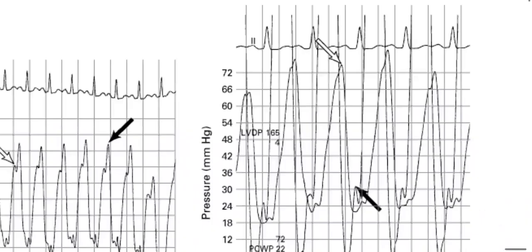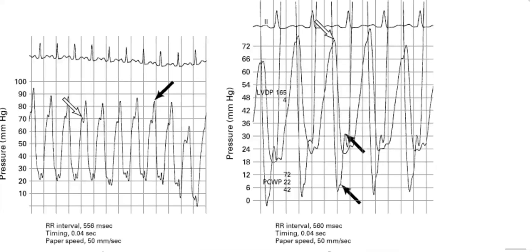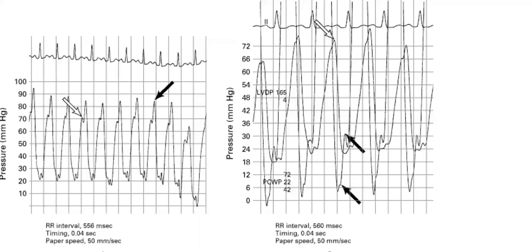Now look at this invasive hemodynamic tracing between the LV and the LA. What does it show? There is a mitral gradient — and a giant V-wave of mitral regurgitation. We have a large V-wave. It's not necessarily severe mitral regurgitation. A large V-wave can occur in other conditions too.